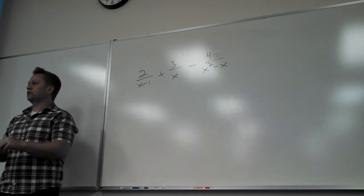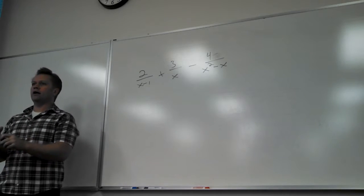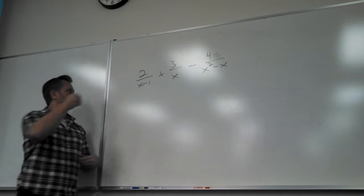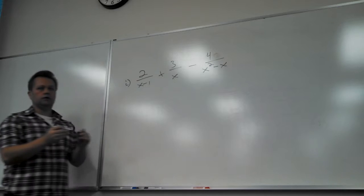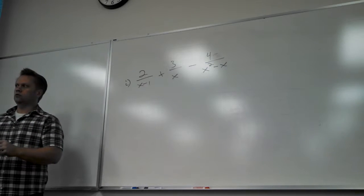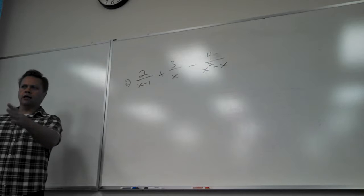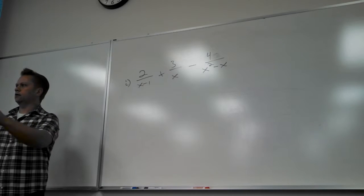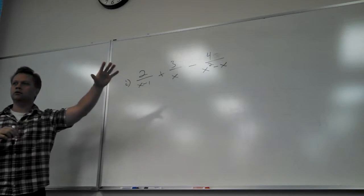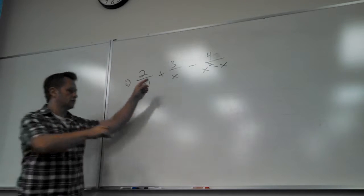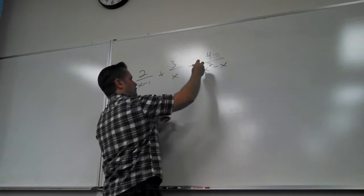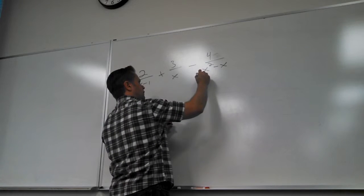No matter how many terms I put down there, what do you need to do? Find the LCD. How do you find the LCD? Can you find it right now, the way things are? Not entirely. You can sort of start, but which one of these needs a little work? The last one, because its denominator is not factored. So I have to see what it's made of — how do I factor this?